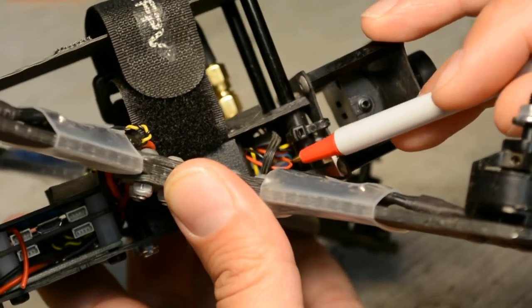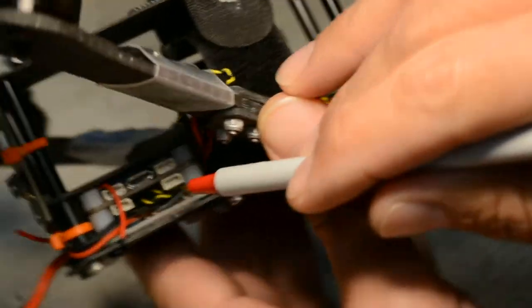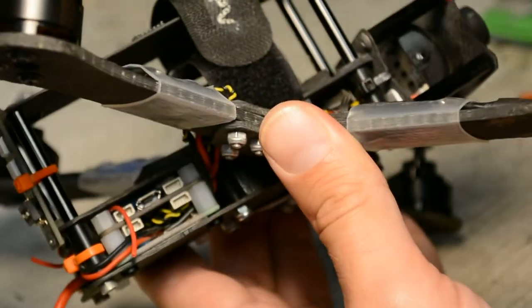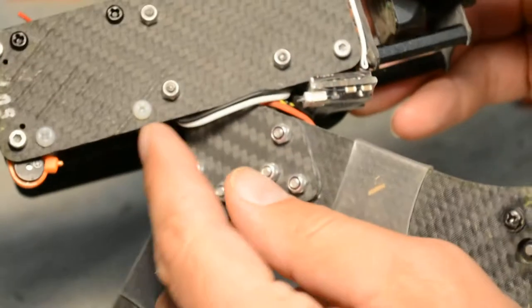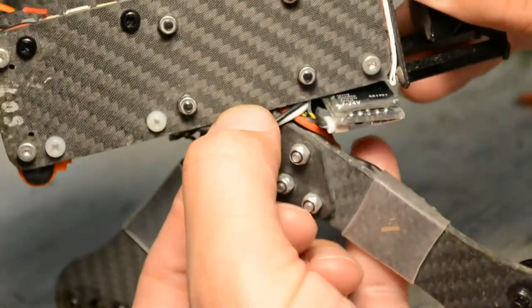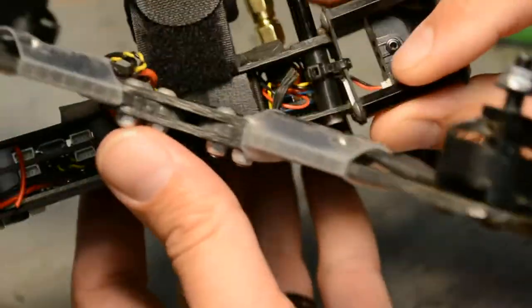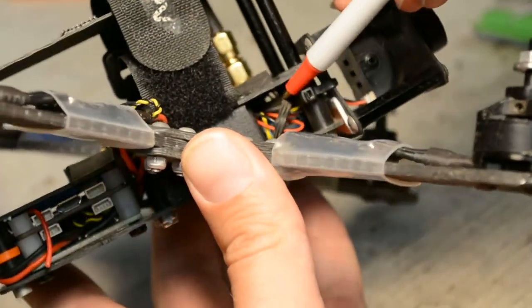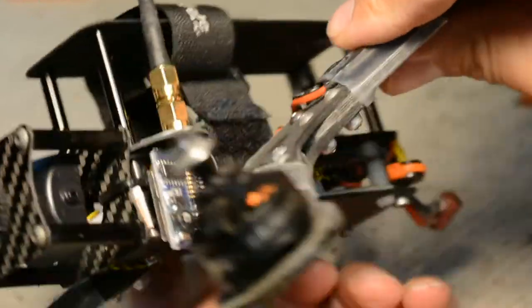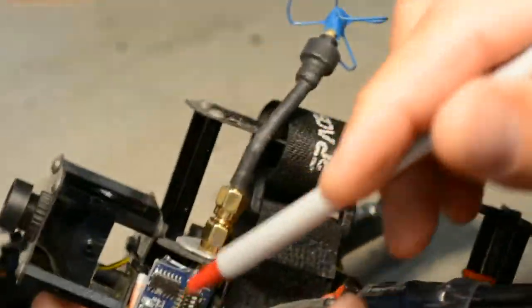Instead of running the 12V from the back to the front, I just have power wires running from the rear power distribution board up to the 12V, and the 12V is supplying the camera and the VTX.